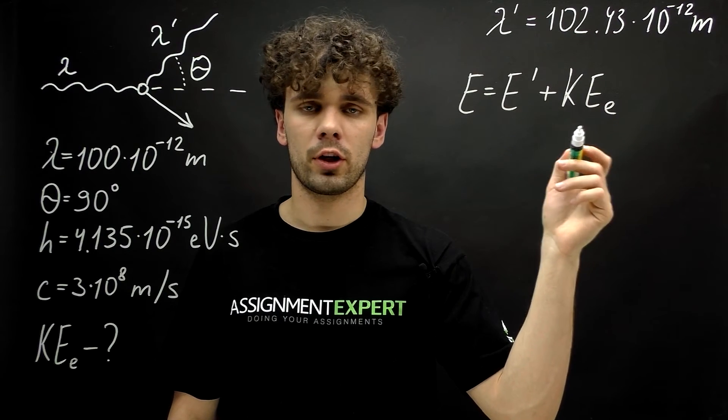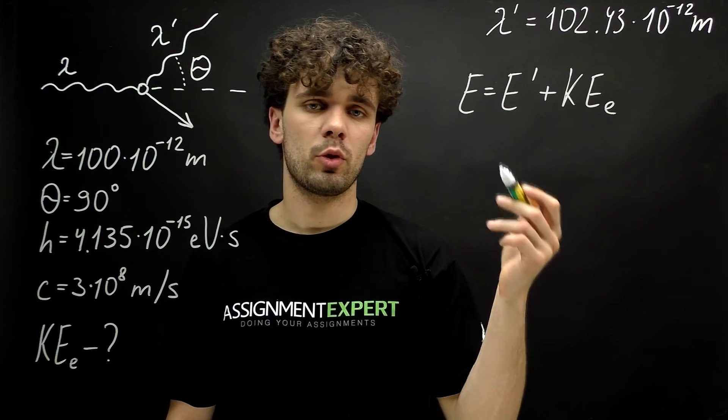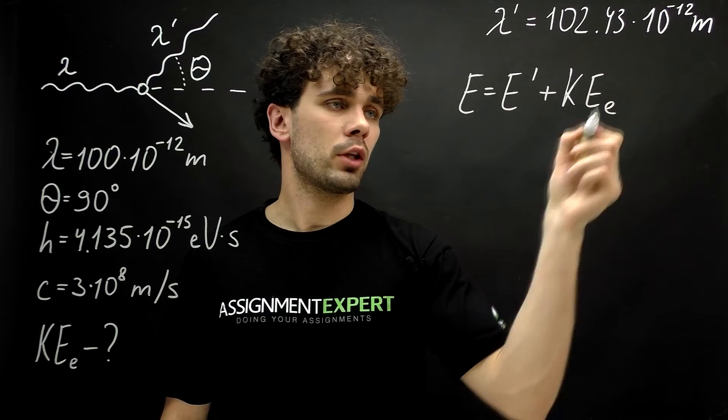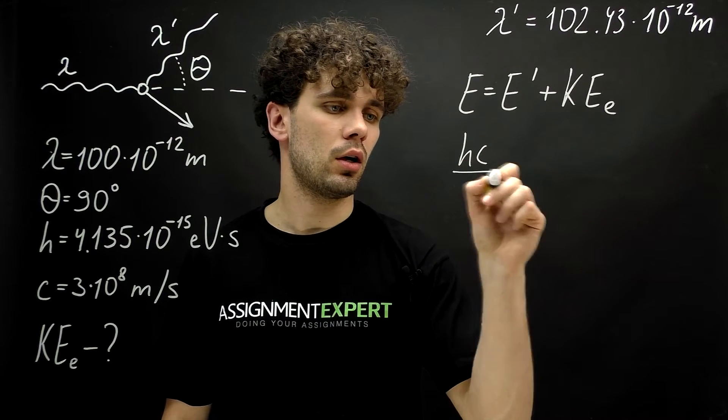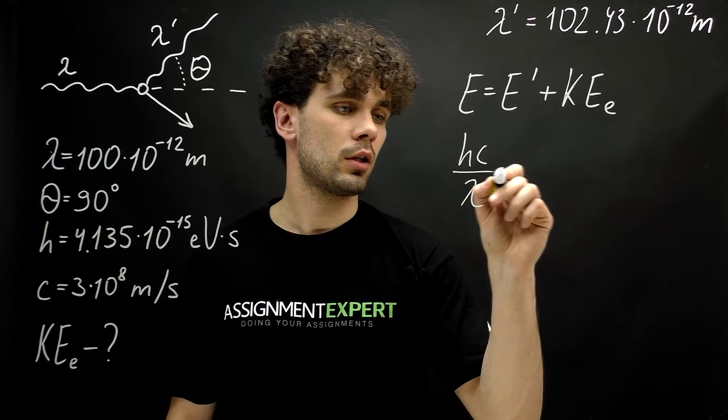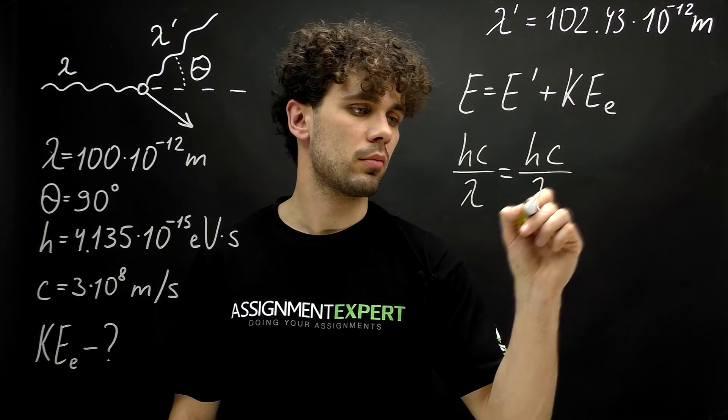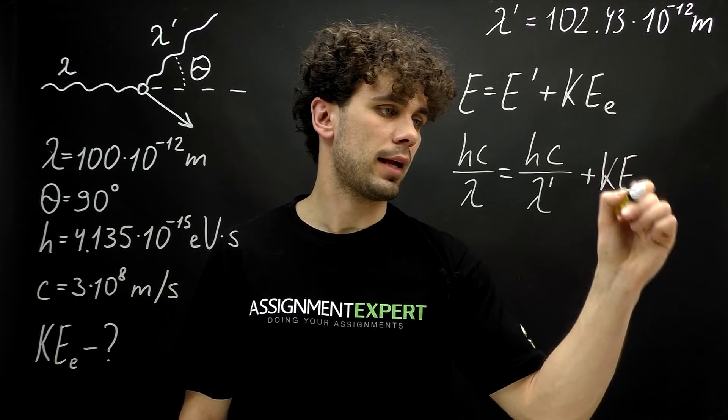And we know the relationship between the energy of the photon and its wavelength. So, we can rewrite this equation as hc over lambda equals hc over lambda prime plus KE of electron.